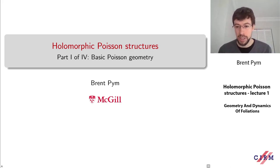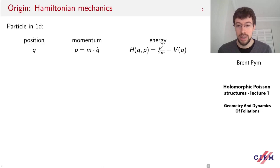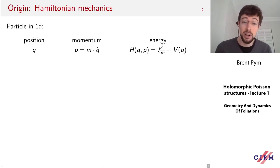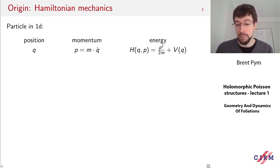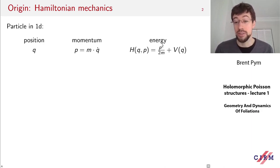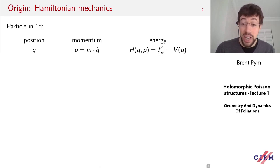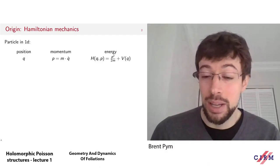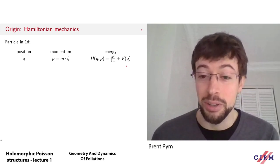This is a subject which has its origins in classical mechanics. Let's consider a particle in one dimension which has position q and momentum p, which is mass times the velocity q-dot. Any other physical quantity we might be interested in would be a function of q and p. For instance, the total energy would be the sum of a kinetic term p squared over 2m and a potential energy term V of q.